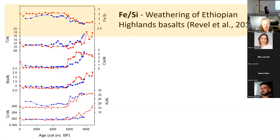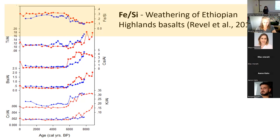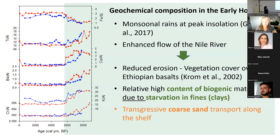The last ratio is iron-to-silica, which gives us information about the weathering of the Ethiopian Highland basalts. The Nile watershed includes different geological provinces, and one distinct output is the Ethiopian Highland basalts — a volcanic area contributing a lot of iron into the system. When we see an increase in this ratio, it means more sediments coming from the Ethiopian Highland basalts.